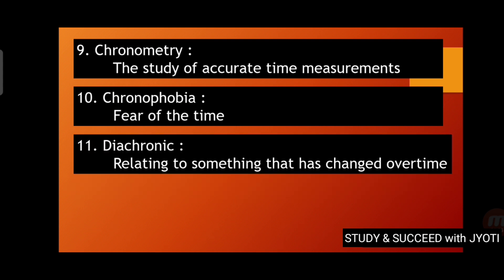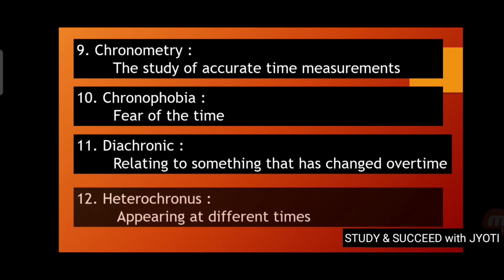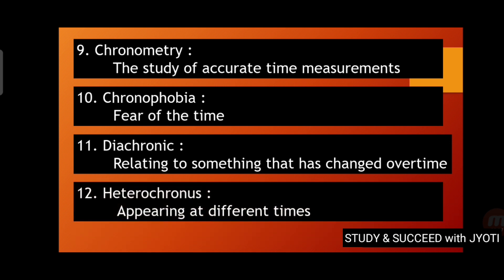Diachronic is related to something that is changed over time — when a change occurs in something over a period of time. Heterochronous — hetero means different — so heterochronous means something which is appearing at different times.